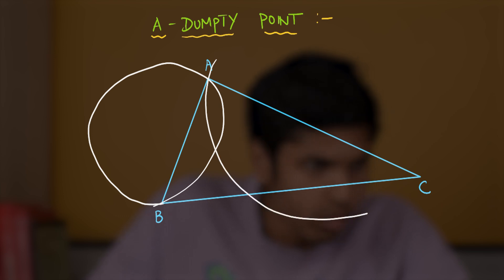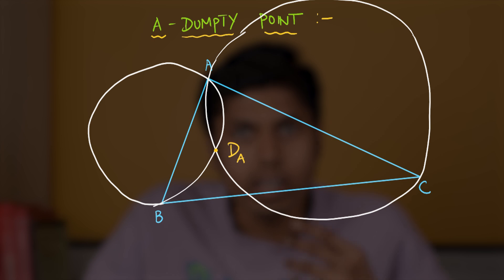So, that shall look something like this. And, these two circles will intersect again at the A Dumpty Point. And, this is how the A Dumpty Point is defined.